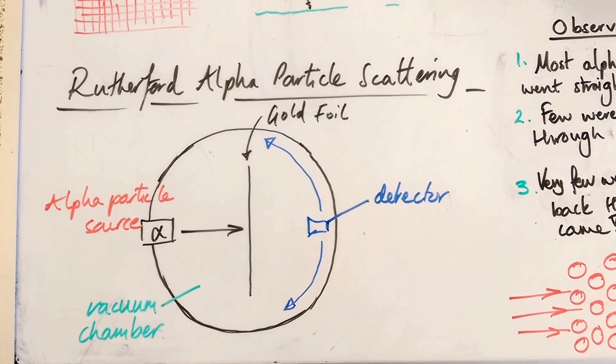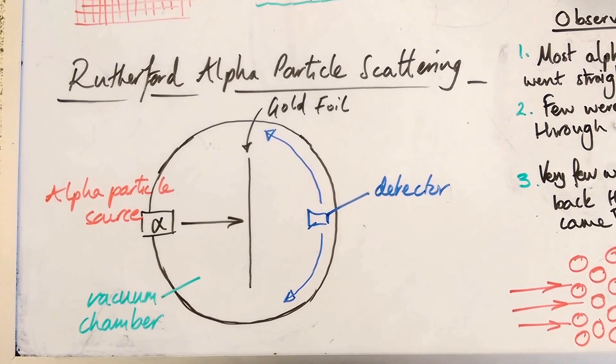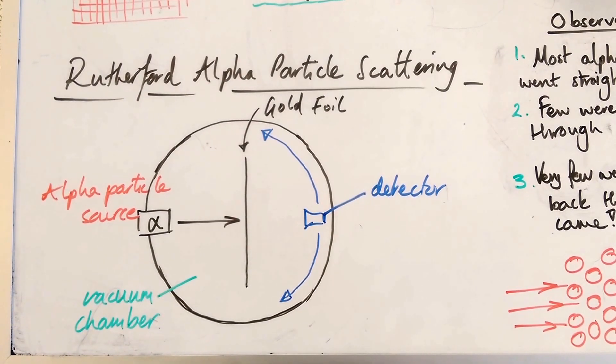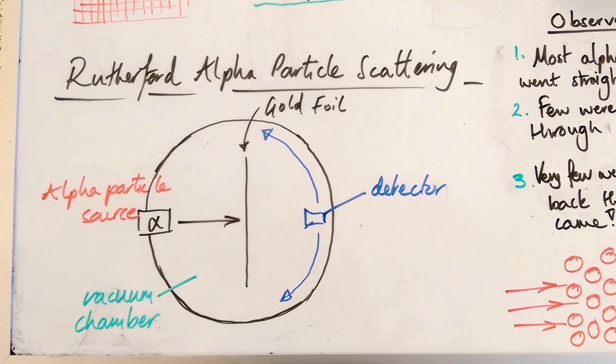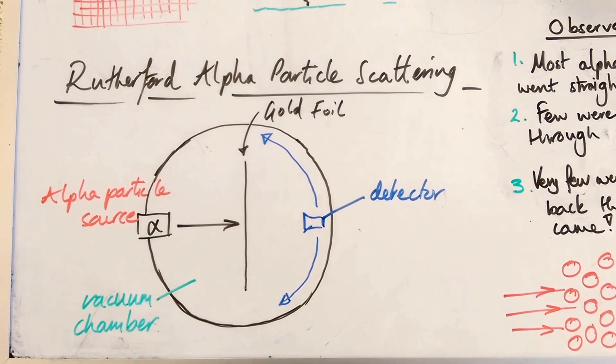He still hadn't found them all though. He'd only found 99% of those that left the alpha particle source. So he moved his detector up and down on the far side of the gold foil, and he found another 0.99%.